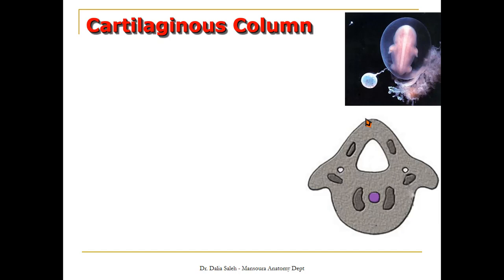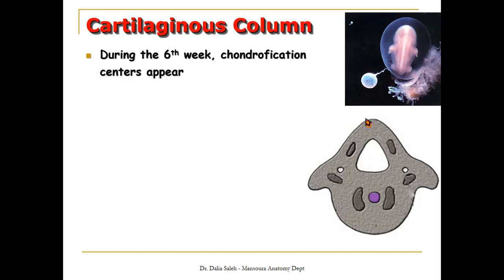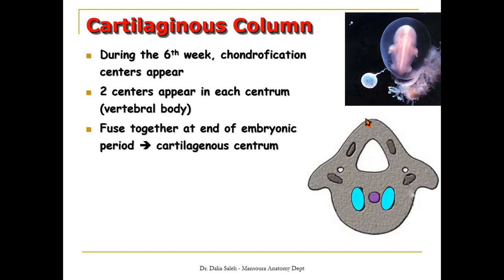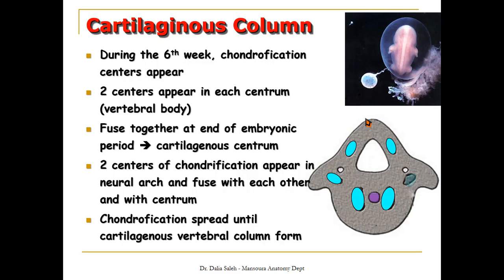The second stage of formation of the vertebral column is the cartilaginous stage. The mesenchyme transforms into cartilage. During the sixth week of development, chondrification centers appear — two centers appear in each centrum, or future body of the vertebra, and they fuse together at the end of the embryonic period, producing a cartilaginous body. Two centers of chondrification also appear in the neural arch and fuse with each other and with the centrum. Chondrification spreads until all vertebrae are made of cartilage.